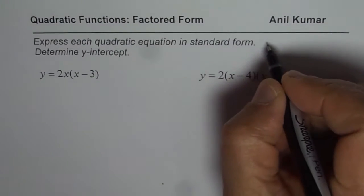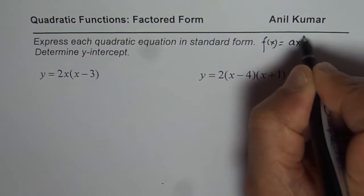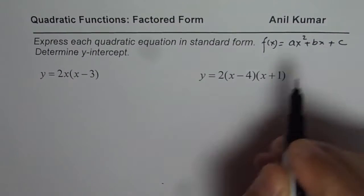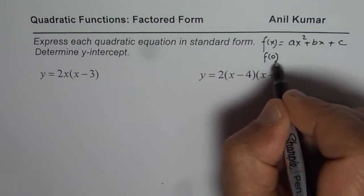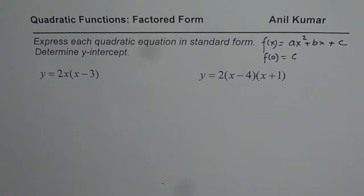Standard form for a quadratic function as you know is f(x) = ax² + bx + c. And y-intercept is c, f(0). If I write 0 here I get c and that is the y-intercept.